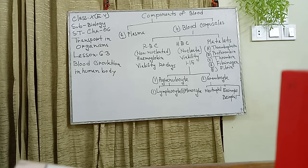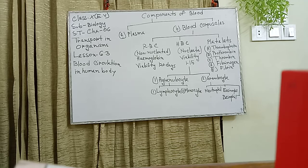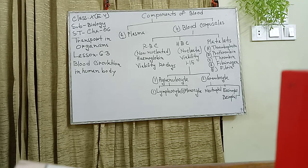Transporting blood throughout the whole body requires only one minute or less. In the human body there are two types of circulatory systems. The first is the blood circulatory system, which consists of the heart, arteries, veins, and capillaries. The second is the lymphatic system, which consists of lymph, lymphatic ducts, and lymphatics.